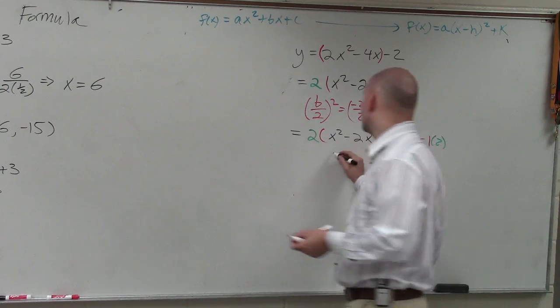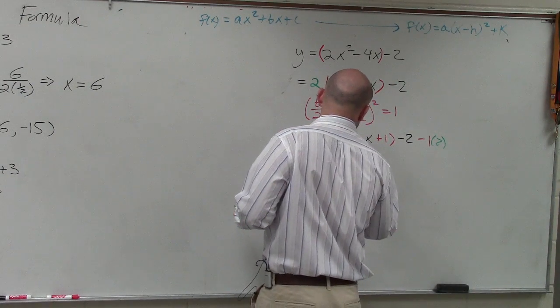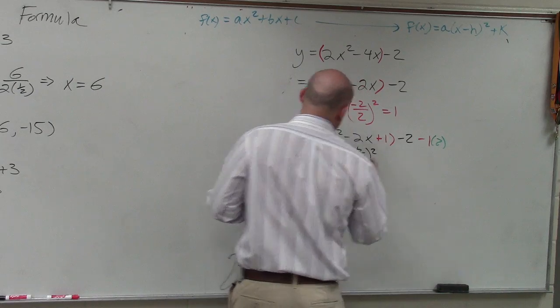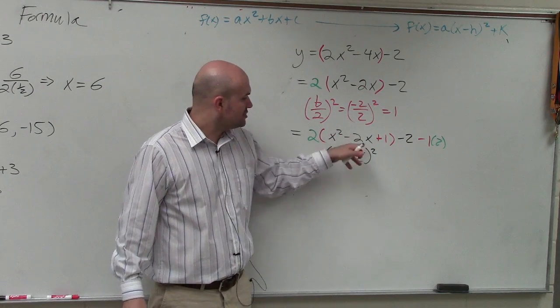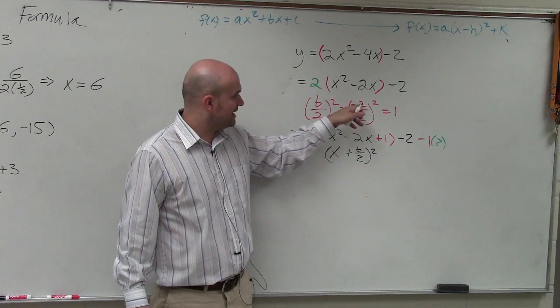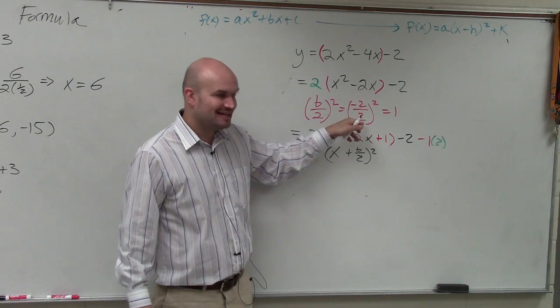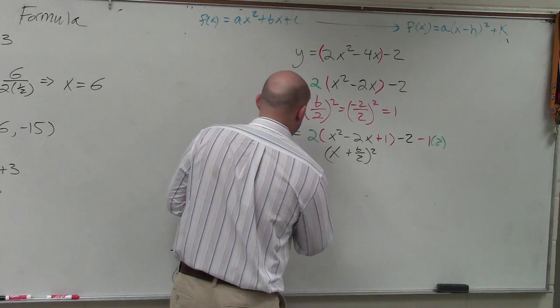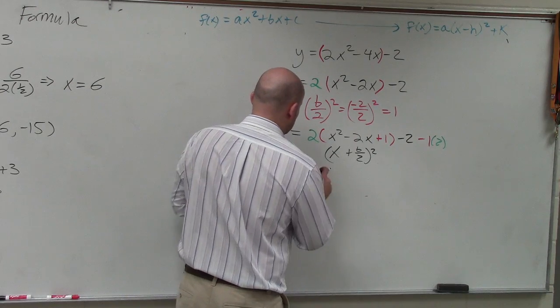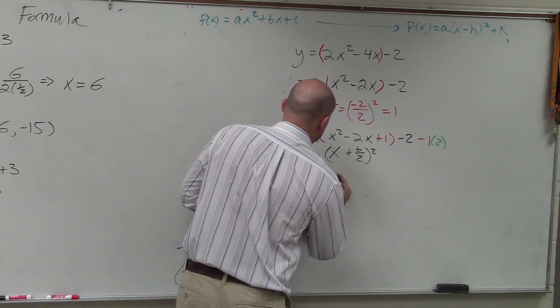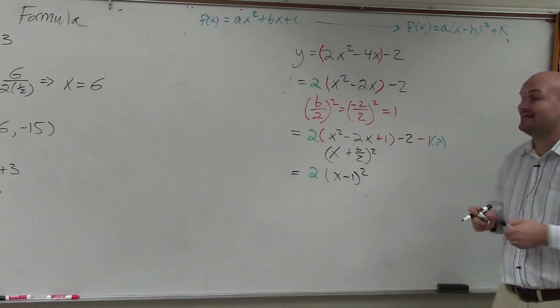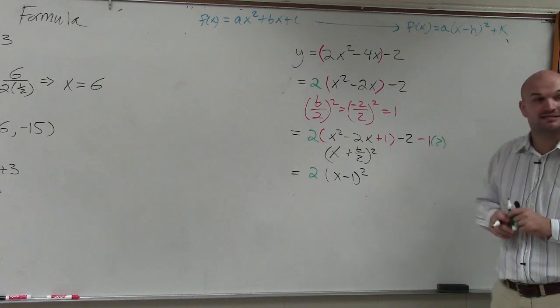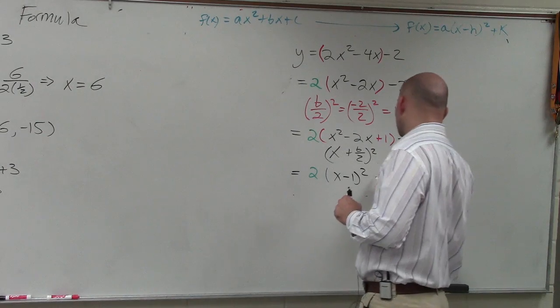Then the next step is doing your x plus b divided by 2 squared. We want to write our perfect square trinomial as a binomial squared. So what was b divided by 2? Negative 2 divided by 2 was negative 1. So therefore, I have green 2 times x minus 1 squared. 2 times negative 1 is negative 2. Negative 2 minus negative 2 is negative 4.